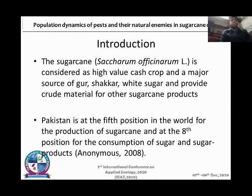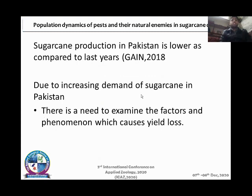Sugarcane is a major cash crop of Pakistan and it provides many sugarcane products. Pakistan is at the 5th position in the world for the production of sugarcane and at the 8th position for the consumption of sugarcane and sugarcane products. Sugarcane production in Pakistan is lower compared to last year's report. Due to increasing demand, there is a need to examine the factors which cause yield loss.